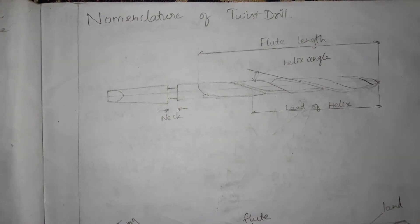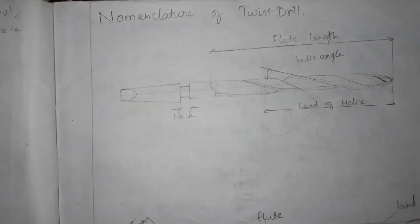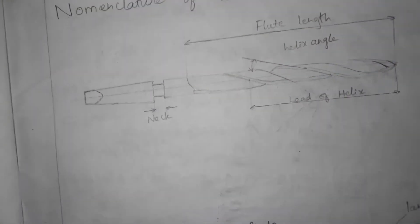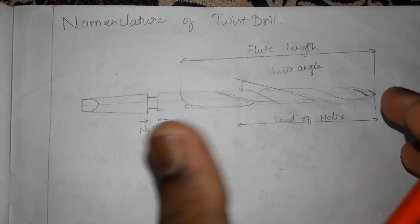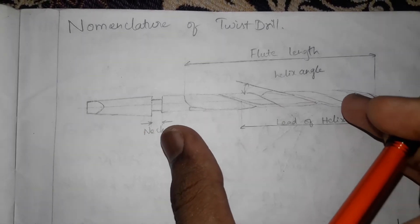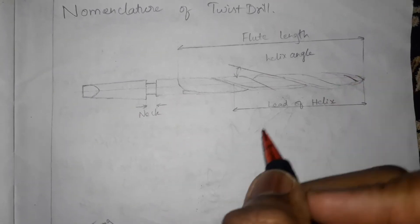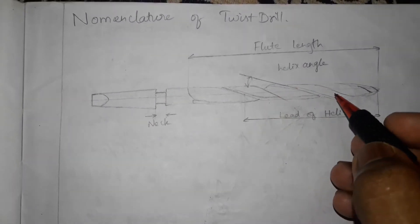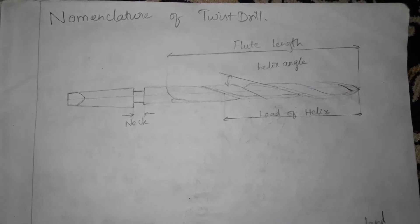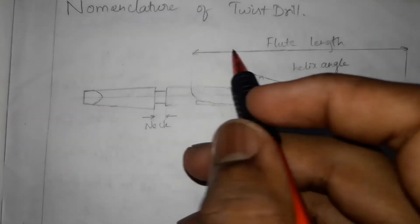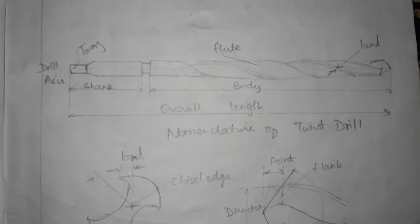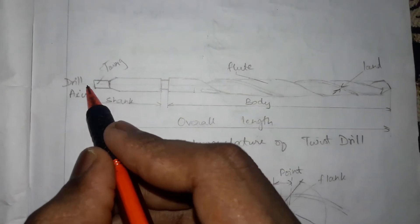Now the nomenclature of the twist drill. This is the twist drill. It consists of a neck, and this is the flute length — the length which has the full threads. This is the lead of helix, and this is the helix angle, which is the angle between the axis of the tool and the helix. This is the detail view of the twist drill, showing the drill axis.